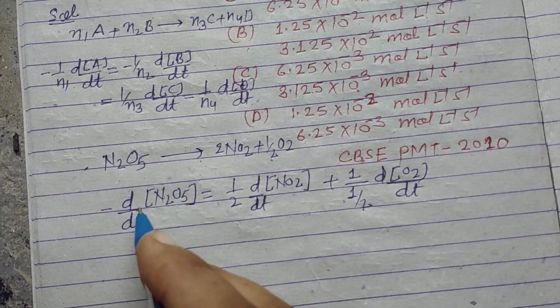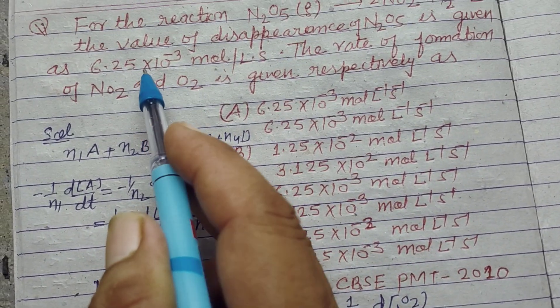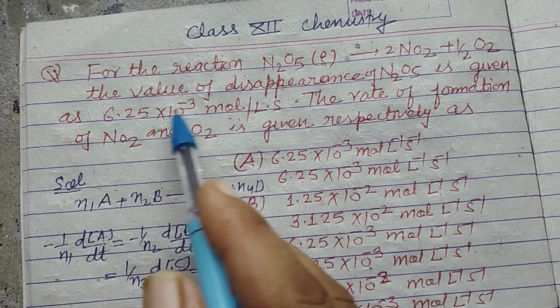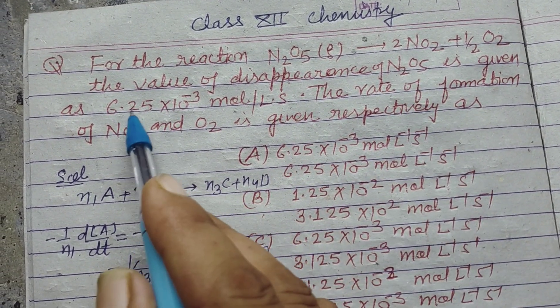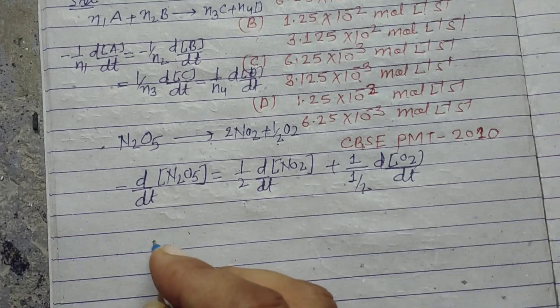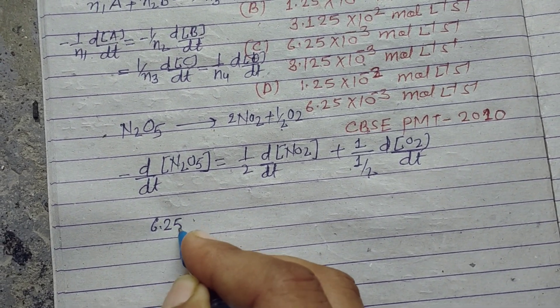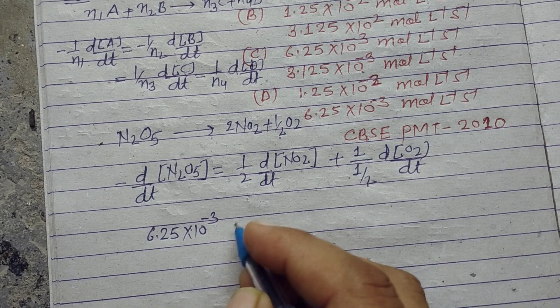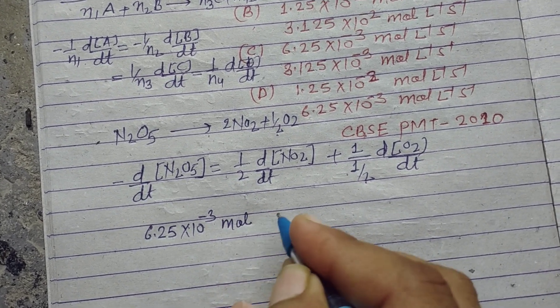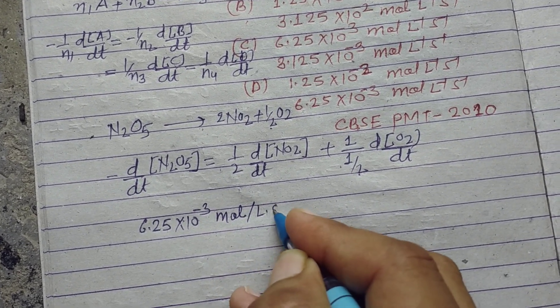And this rate of disappearance of N2O5 is given as 6.25×10^-3 mol per liter per second.